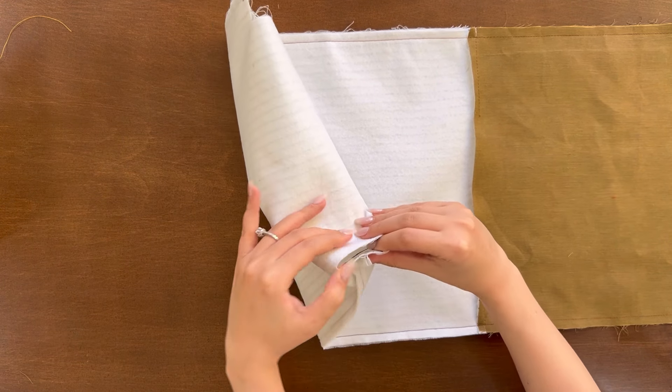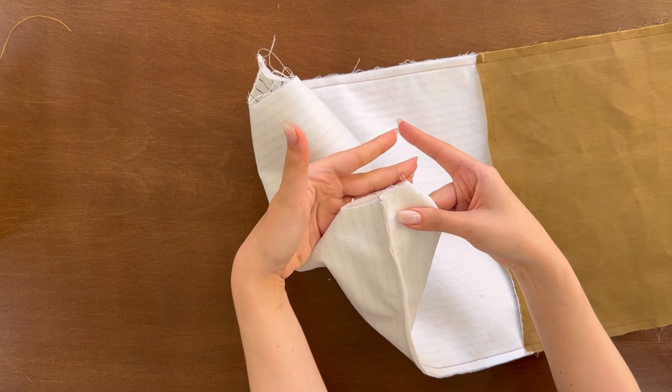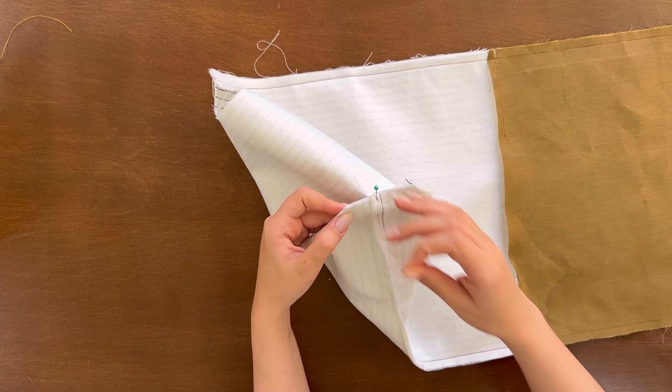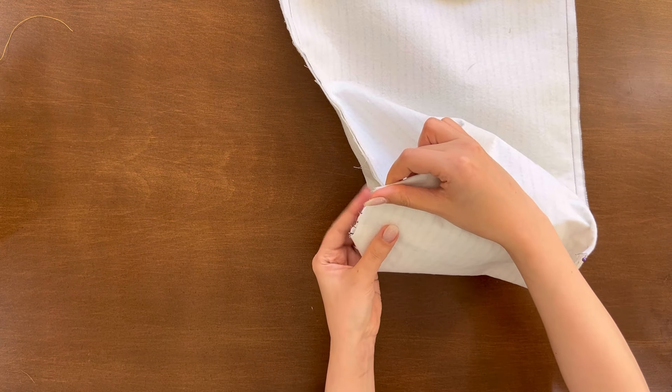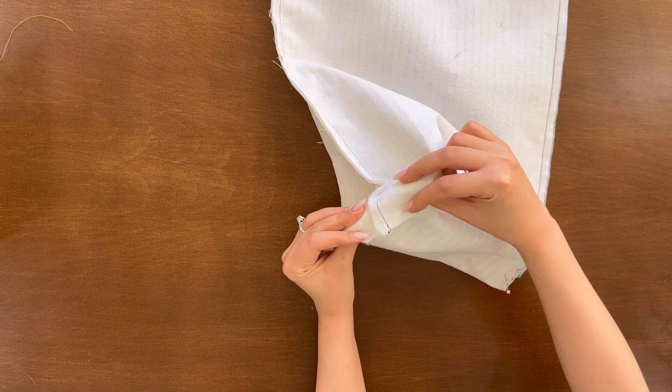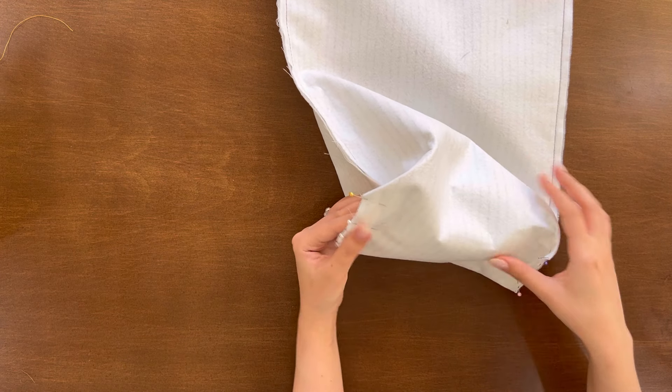Now, it's time to box the corners. As you can see, I fold it and place the side seam in the middle and start pinning it. Repeat the same for the other corner on main fabric and two other corners on the lining.